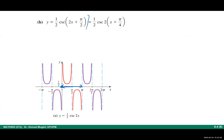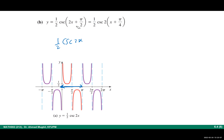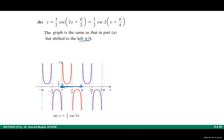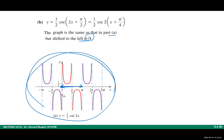Now let's sketch y = ½csc(2x + π/2). We have a horizontal shift, so rewrite in standard form by factoring out 2: y = ½csc(2(x + π/4)). The horizontal shift is −π/4, meaning the graph shifts π/4 to the left. One approach is to take the graph from part (a) and shift it left by π/4, so the first vertical asymptote moves from 0 to −π/4.